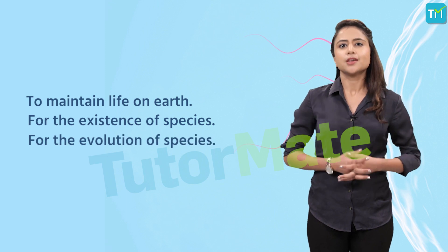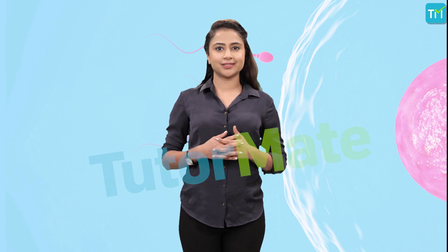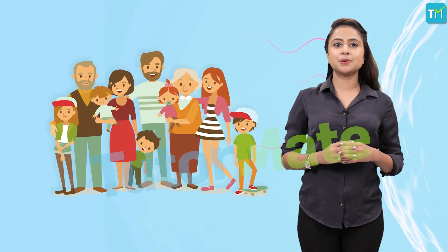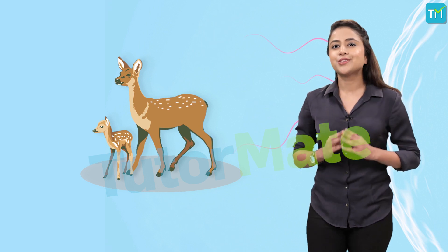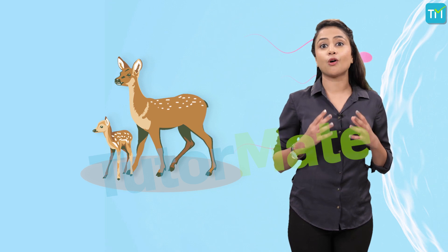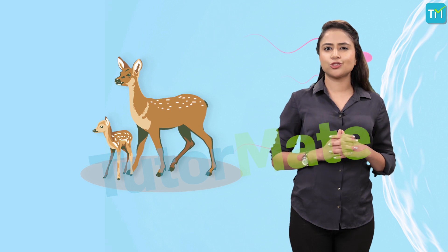Now we know why organisms reproduce. However, the offspring born after reproduction also has a few peculiarities. For example, have you ever wondered why organisms belonging to the same species look similar to each other? That is because every organism gives birth to its offspring with the same basic characteristics. A human being gives birth to human babies, dogs always give birth to puppies, and a deer will always give birth to a fawn. Haven't you heard people say things like 'oh, you look exactly like your dad' or 'wow, you're like your mom's photocopy'?